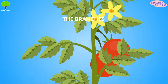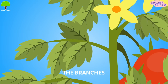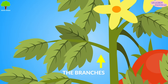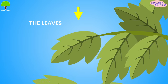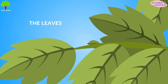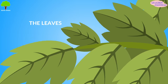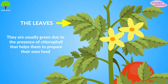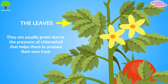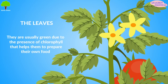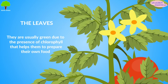The branches. Branches are parts that grow from the stem. The leaves. Leaves grow on the stem and branches.